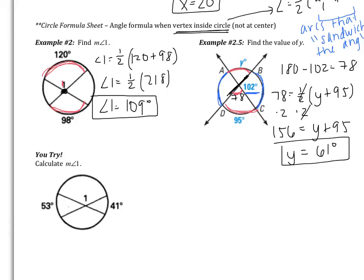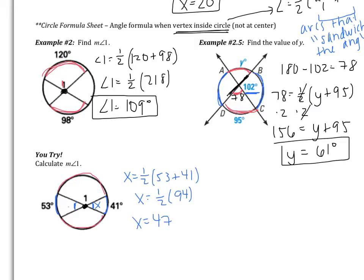The vertex is inside the circle but not at the center, so I'll use the formula: angle equals one half the sum of the arcs. Angle 1 is sandwiched by two arcs, but I don't know either of them. I do know the blue arcs of 53 and 41, which sandwich the vertical angle x. So x equals one half of 53 plus 41, giving x equals one half of 94, so x equals 47. Since angle 1 is supplementary to x, angle 1 plus 47 equals 180, giving angle 1 equals 133 degrees.